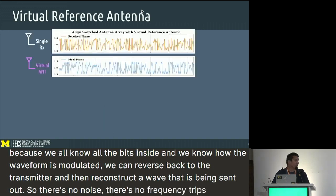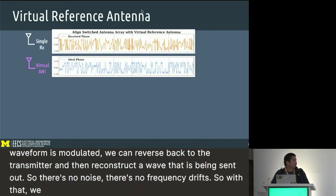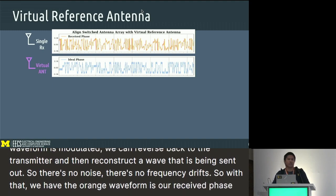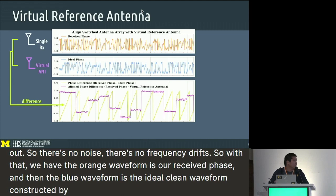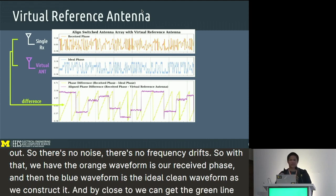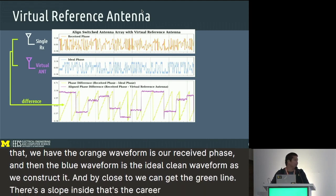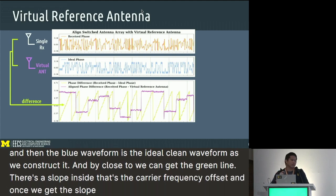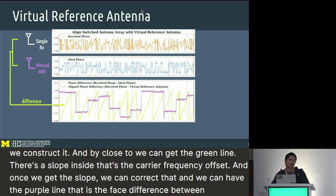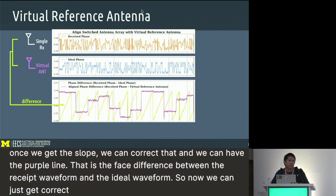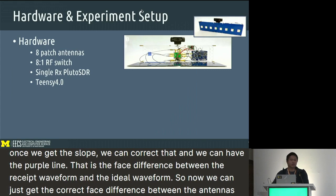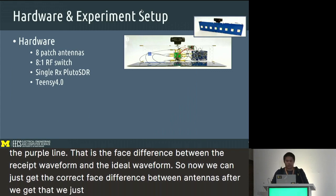With the virtual reference, we have the orange waveform as our received phase, and the blue waveform is the ideal clean reconstructed waveform. By subtracting those two, we get the green line — there's a slope inside, which is the carrier frequency offset. Once we get the slope, we can correct it and get the purple line: the phase difference between the received waveform and the ideal waveform. From this, we can extract the correct phase differences between the antennas, and then ship them to the angle of arrival calculation.